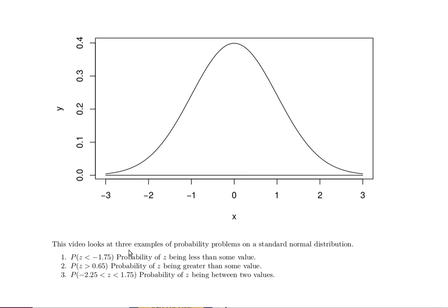We'll look at three probabilities: the probability that Z is less than a particular value, the probability that Z is greater than a particular value, and the probability that Z is between two values.